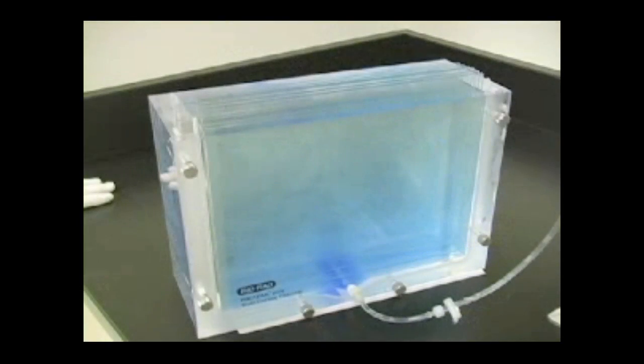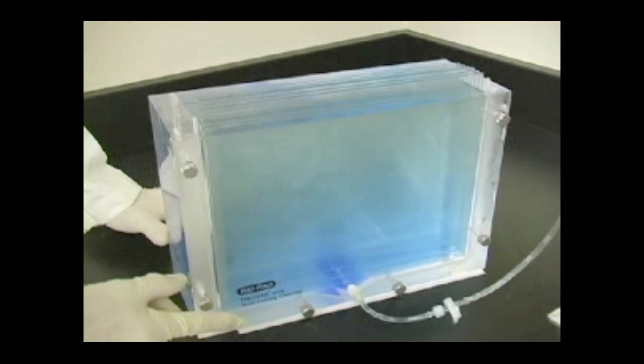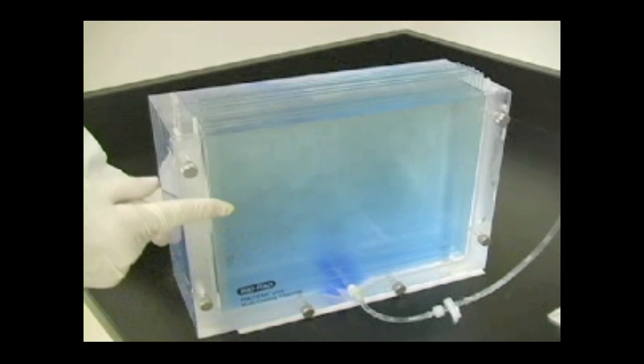You can see that the finished gel is darker in color on the bottom and gradually gets lighter toward the top, showing that a gradient has been formed. Once again, we artificially colored the heavy solution blue, so your gel will be clear.